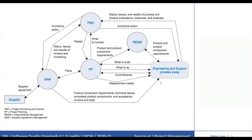The basic project management process areas address the activities related to establishing and maintaining the project plan, establishing and maintaining the commitments, monitoring the progress against the plan, and taking corrective actions for managing the overall project. It also looks into supplier agreements. This diagram provides a bird's eye view of the interactions among the basic project management process areas with other process area categories.